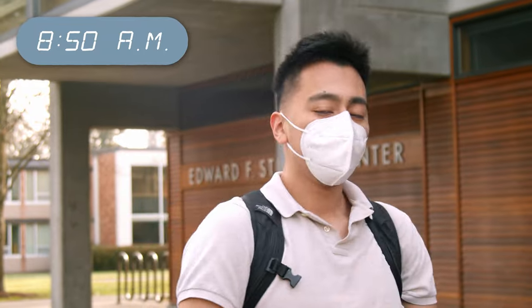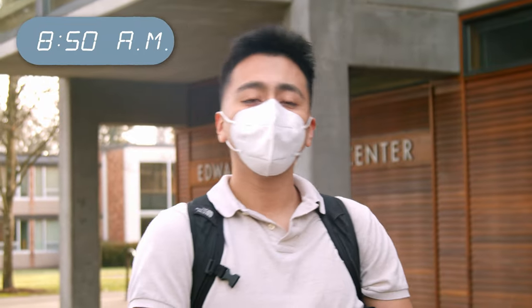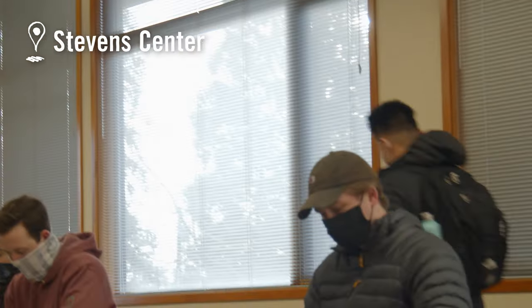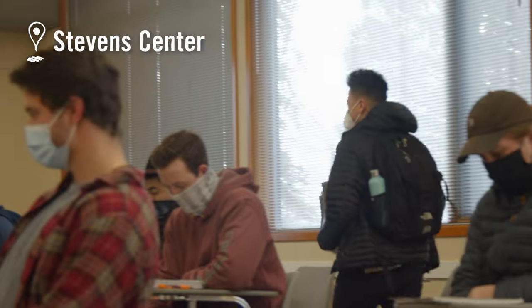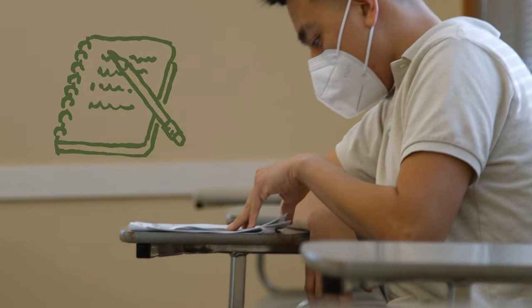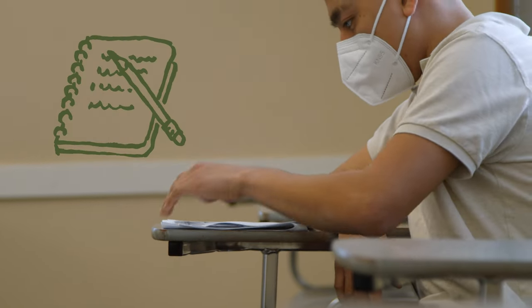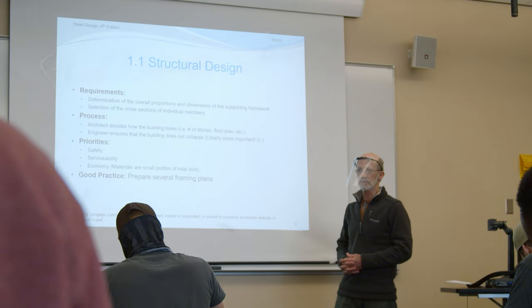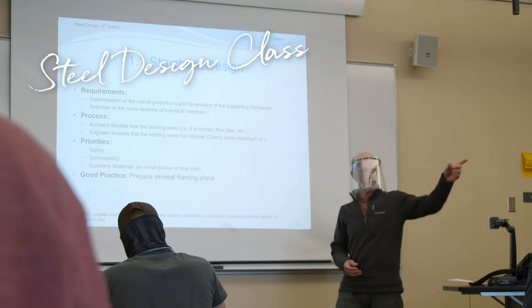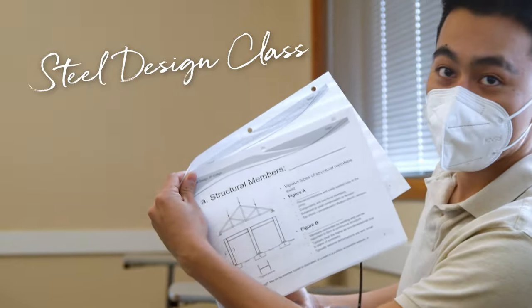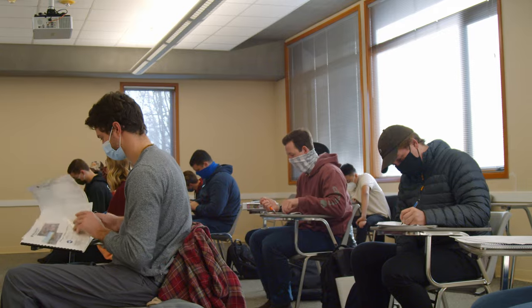Right now we're going to go to our first class of the day, which is steel design. We're going to talk about how to work with steel, how to analyze structures. It's a very important class if you want to major in civil engineering and if you want to be a structural engineer, which is a subgroup of civil engineering. Let's see what we learn and let's go for it.